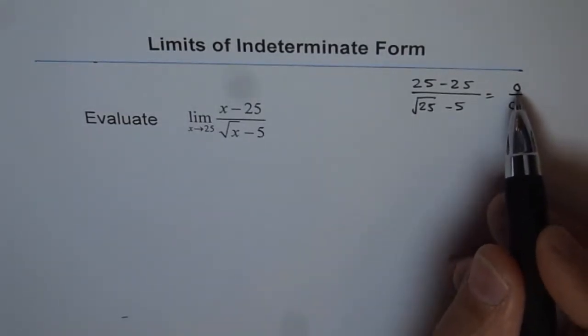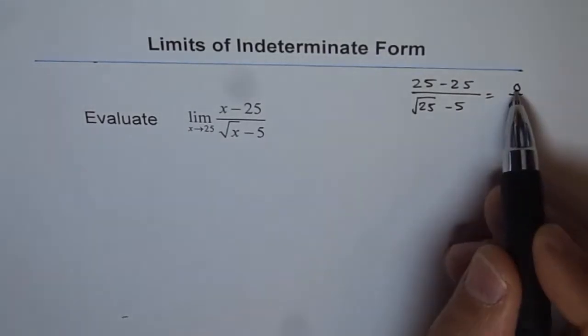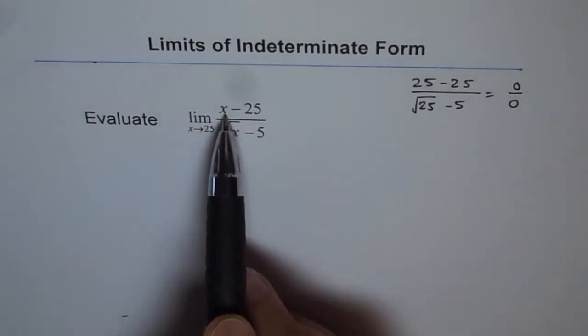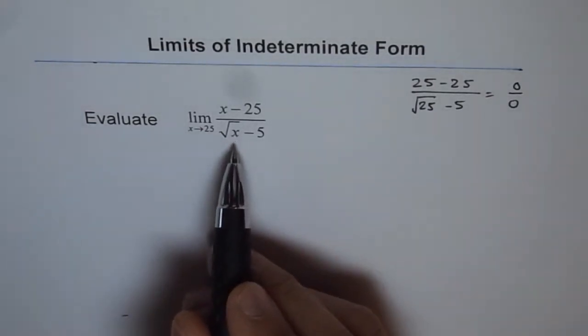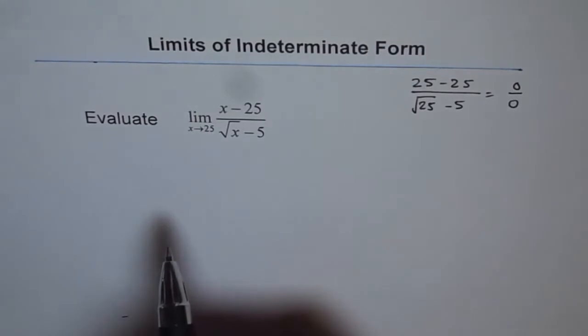Now, it says that there is a factor. When we substitute 25, we got 0. That means x minus 25 is a factor. We can, of course, see x minus 25 in the numerator, but it is kind of hidden in a factor form in the denominator, which we can bring out by factoring or using a technique.